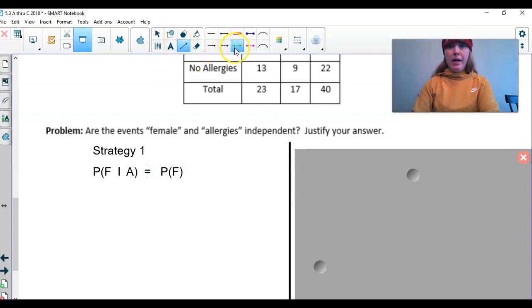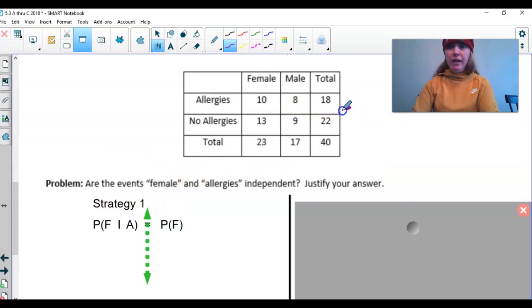And we want to see if they're equal. So what am I going to do now? I'm going to figure out the probability of being female given we already have allergies. I'd like to circle the given. I'm dealing with these numbers.